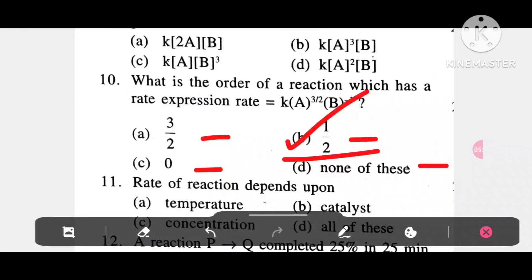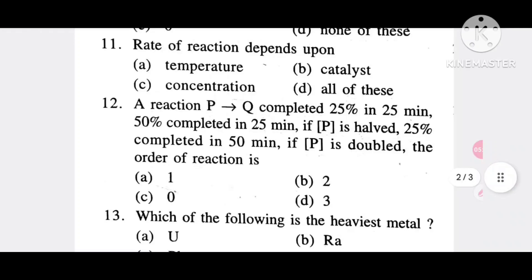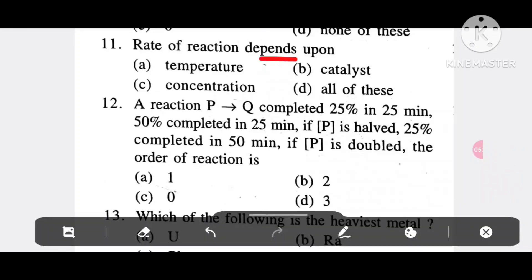Question 11: Rate of reaction depends upon option A, temperature; option B, catalyst; option C, concentration; option D, all of these. It is all of these. Question 12: A reaction P → Q completed 25% in 23 minutes, 50% in 25 minutes. If P is half, 25% completed in 50 minutes. If P is double, the order of reaction is option A, 1; option B, 2; option C, 0; option D, 3. It is 0, option C.